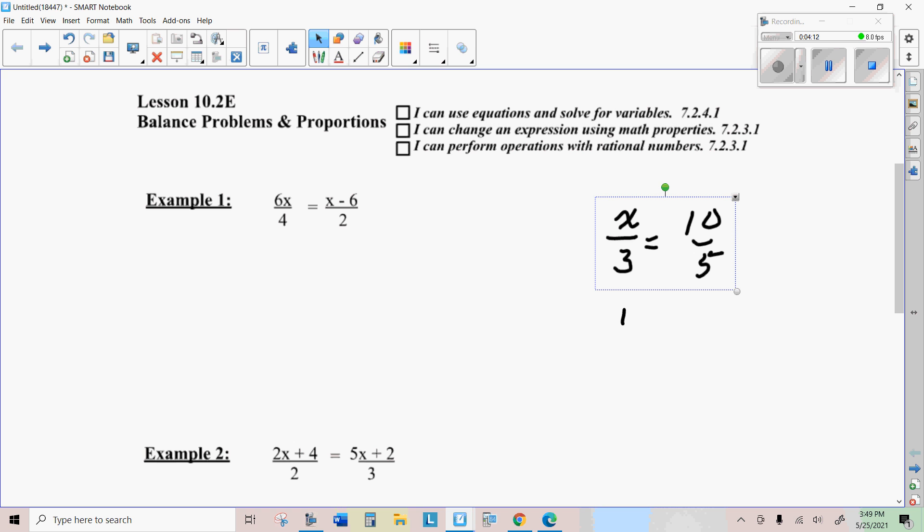Another way you can solve that, though, is you know that cross products are equal. So you could take 3 times 10, and it should equal 5 times X. Okay, so I did 3 times 10 to get this 30, and then I did 5 times X to get the other cross product.